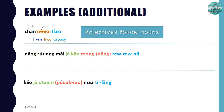The second example is for เร็วๆนี้. The sentence is หนังเรื่องใหม่จะเข้าโรงเร็วๆนี้. หนังเรื่องใหม่ is the subject meaning 'a new movie' — หนัง means 'movie' and เรื่อง is a classifier for movies. จะเข้าโรง are the verb and object meaning 'will be broadcast in the cinema.' And เร็วๆนี้ as an adverb means 'soon.' So this sentence means 'A new movie will be on air in the cinema soon.'